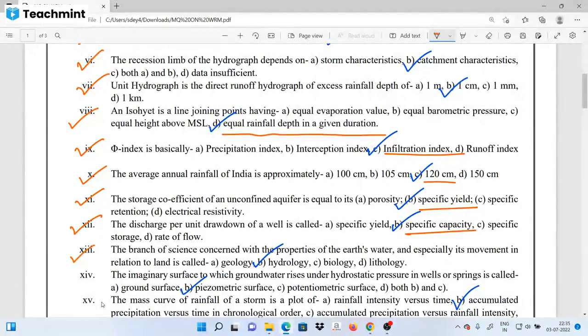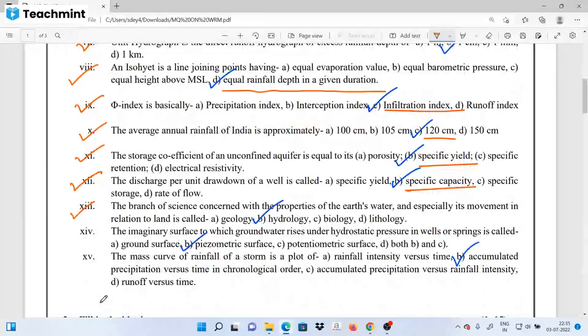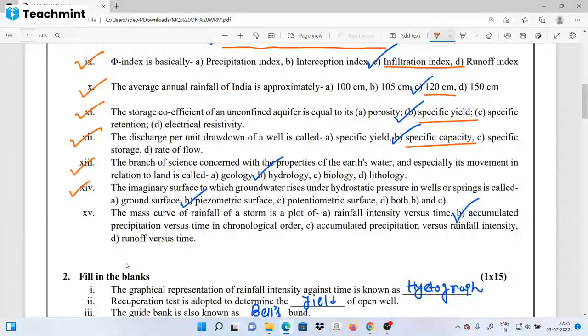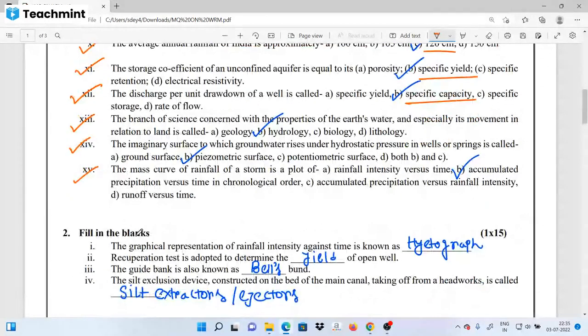The discharge per unit drawdown of a well is known as specific capacity. The branch of science concerned with the properties of earth's water, and especially its movement in relation to land, is known as hydrology. The imaginary surface to which groundwater rises under hydrostatic pressure in a well or spring is called piezometric surface. The mass curve of a rainfall storm is a plot of accumulated precipitation versus time in chronological order.